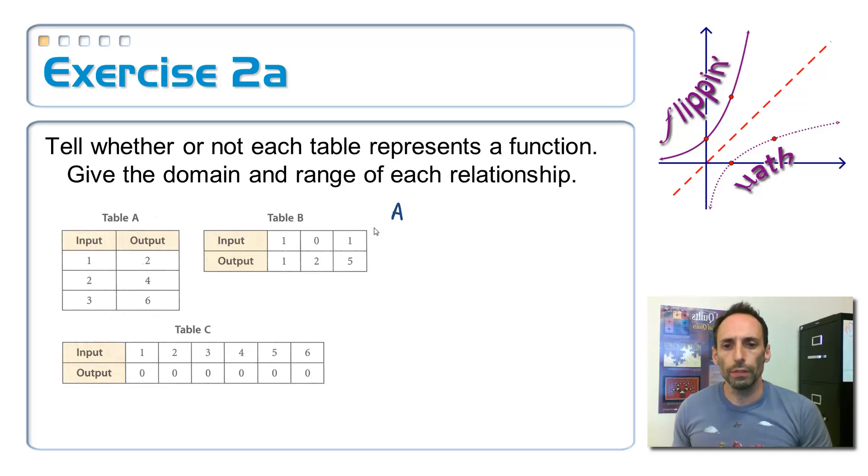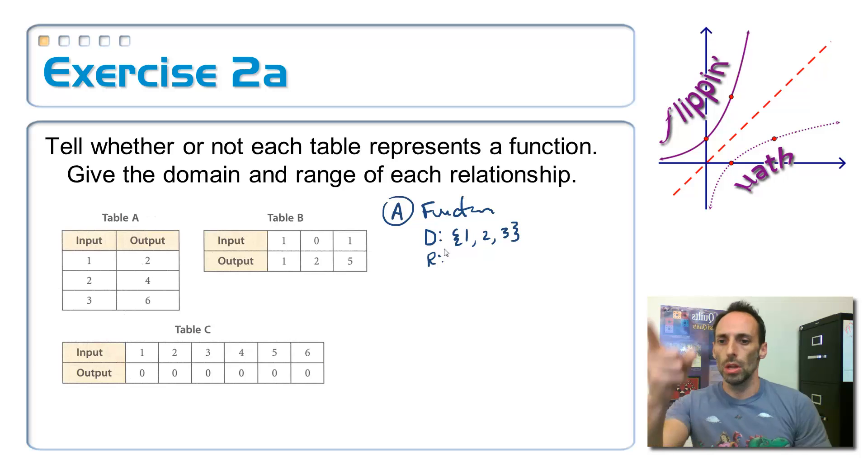Every input has just one output. Every boy has only one girlfriend. So this is a function. Now let's list the domain and the range. The domain, just have the numbers one, two, and three. One, two, and three. And the range, we have the numbers two, four, and six. Two, four, and six. Piece of cake.